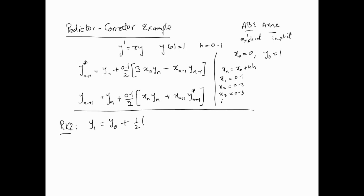The second-order Runge-Kutta gives: y1 = y0 + (1/2)*(k1 + k2), where k1 = h * f(x0, y0) = 0.1 * f(x0, y0), and k2 = 0.1 * f(x0 + h, y0 + k1) = 0.1 * f(x0 + 0.1, y0 + k1).